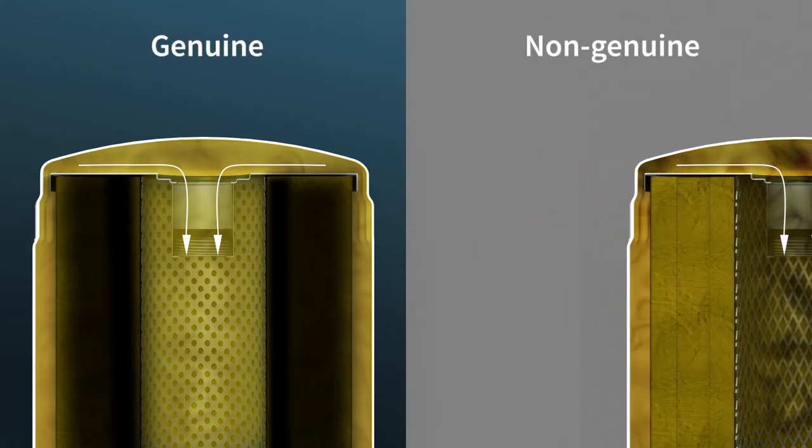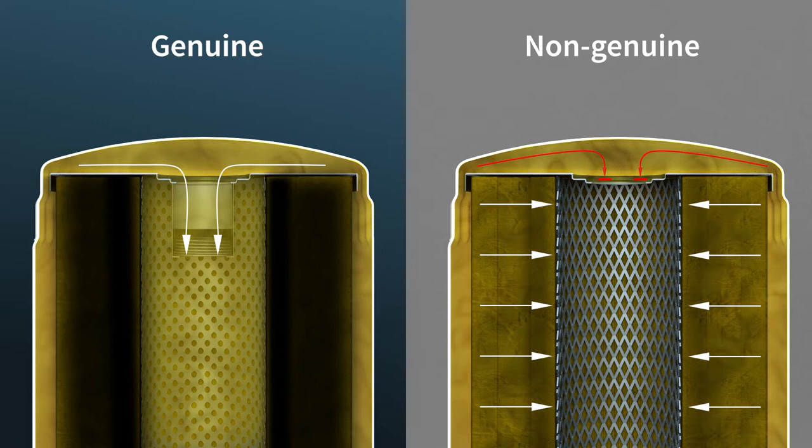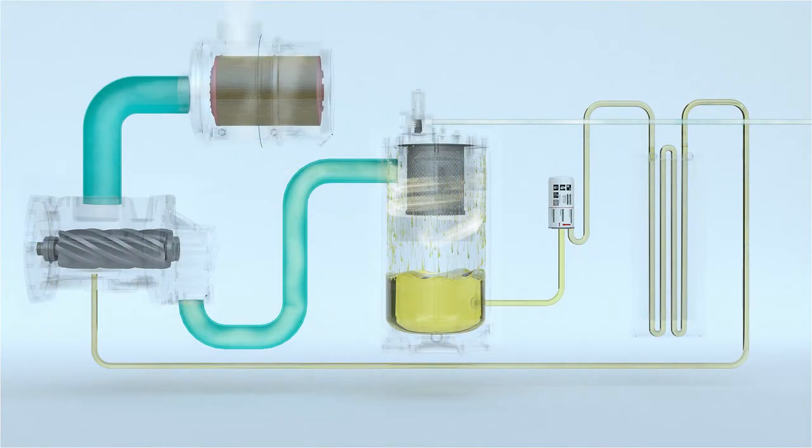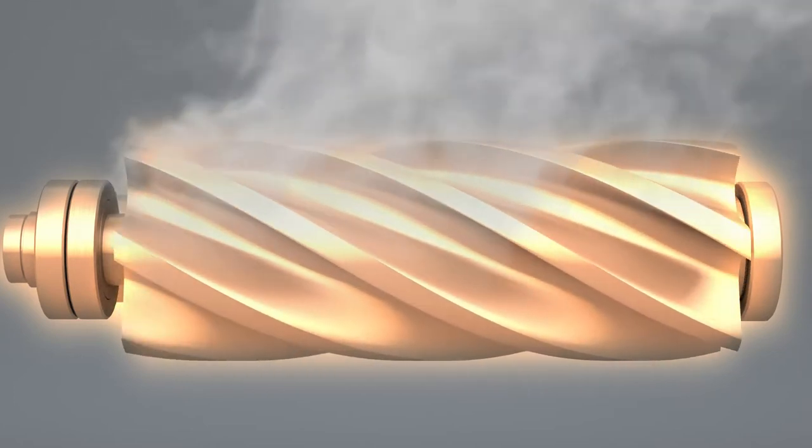In the absence of a bypass valve, a clogged filter can lead to a catastrophic breakdown, as no or a limited amount of oil is sent into the oil circuit, causing bad to no lubrication and leading to metal-to-metal contact, increased temperatures, and so on.